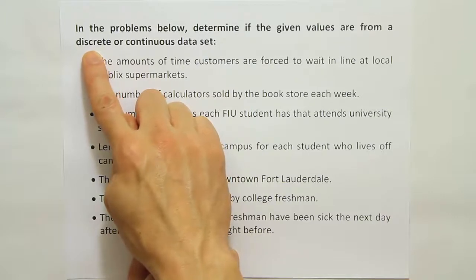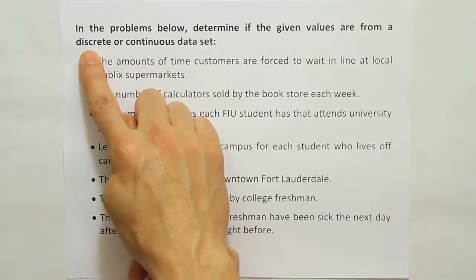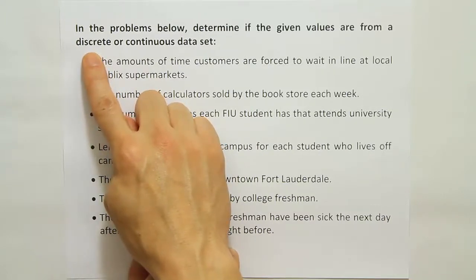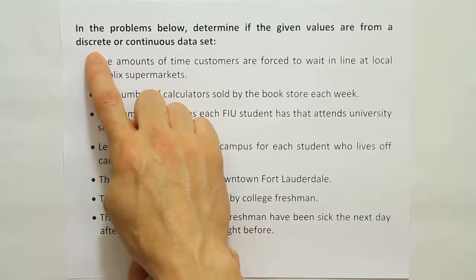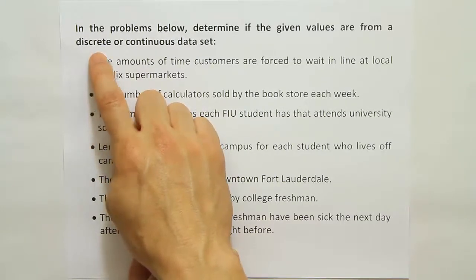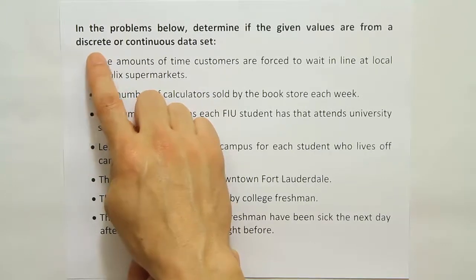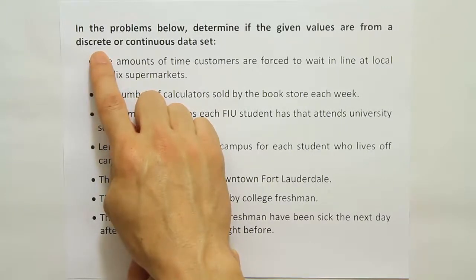You can say you're going to bring one book to school, you can say you're going to bring two books to school. But because that data set is discrete, you can't get something like 1.8 or 1.7 or 1.6. Those numbers are not available — not allowed.